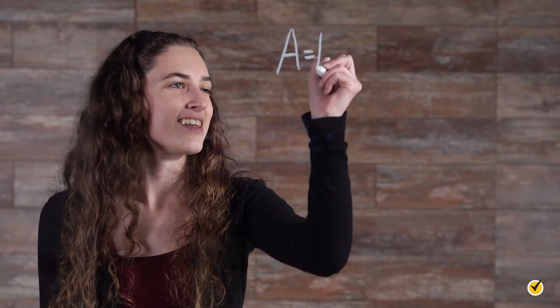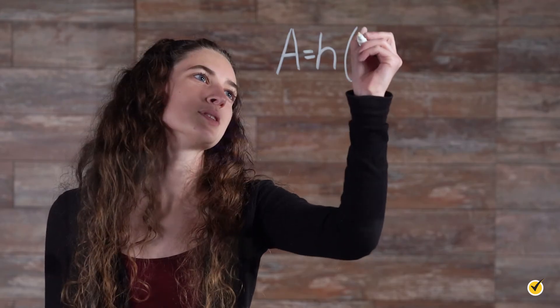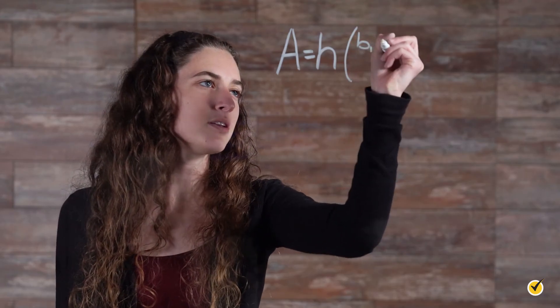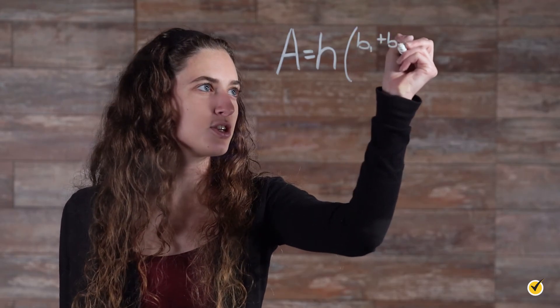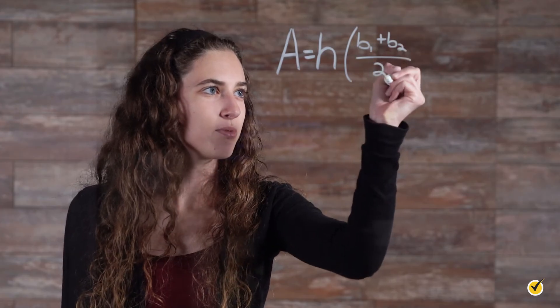But what if we don't have graph paper or a conveniently sized trapezoid? That's why we need a formula. The formula for finding the area of a trapezoid is A equals the height of the trapezoid times the length of base one plus the length of base two divided by two.